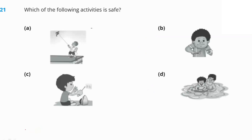Which of the following activities is safe? A boy flying a kite on a terrace about to fall — unsafe. A boy lighting a match — unsafe. A boy putting a screwdriver in a plug — unsafe. A boy learning to swim in the presence of an adult — safe. Option D is our right answer.